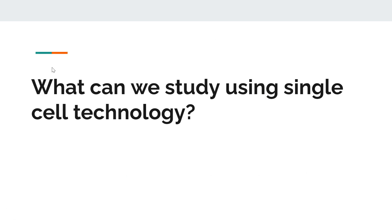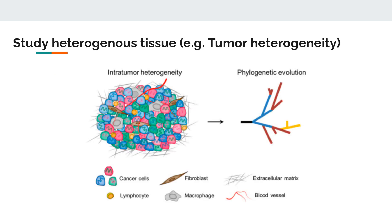Now let's talk about what we can study using single cell technology. The first application is studying heterogeneous tissue — for example, tumor heterogeneity. We know that a tumor is not homogeneous; it's heterogeneous, meaning different cell types come together and function together. We can have cancer cells, fibroblasts, macrophages, and lymphocytes — four types of cells in this tumor.